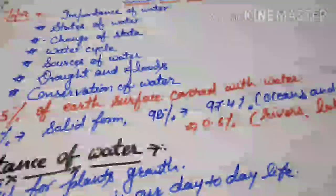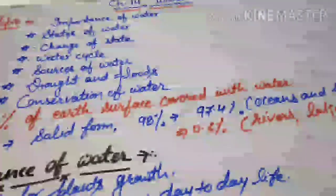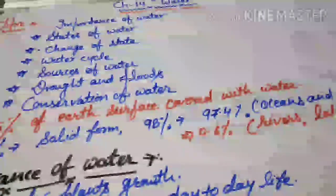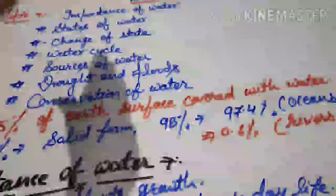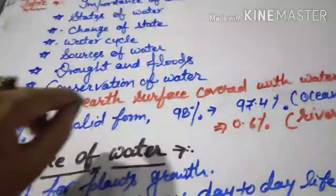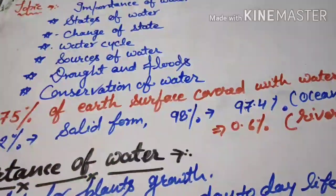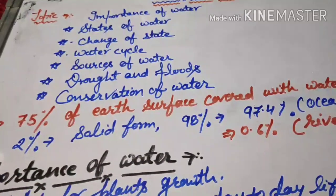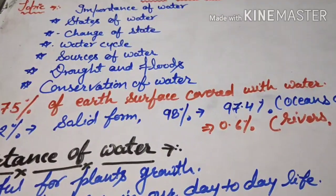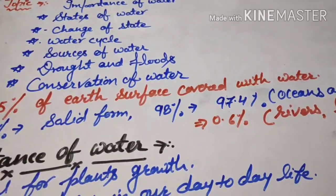Hello dear students, good morning to all of you. Today we are going to start Chapter 14 - Water. In this chapter we are going to discuss the following topics: importance of water, states of water, changes of state, water cycle, sources of water, drought and floods, and conservation of water.